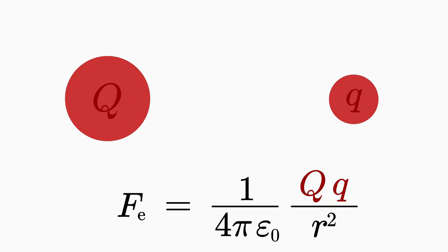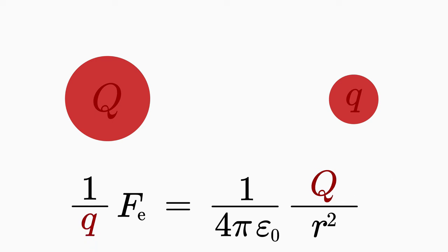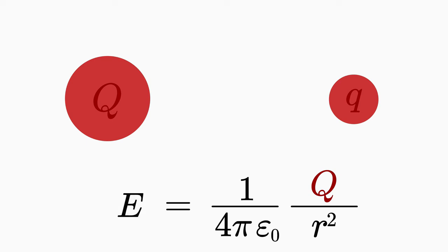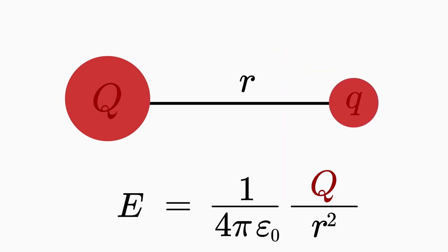To do so, you simply divide Coulomb's law by q on both sides. This way, on the right-hand side, the small charge drops out and instead lands on the left-hand side of the equation. The quotient on the left-hand side, F over q, is defined as the electric field E of the source charge Q. By calling it source charge, we imply that the charge Q is the source of the electric field. The electric field E thus indicates the electric force which would act on a small charge when placed at the distance r to the source charge.